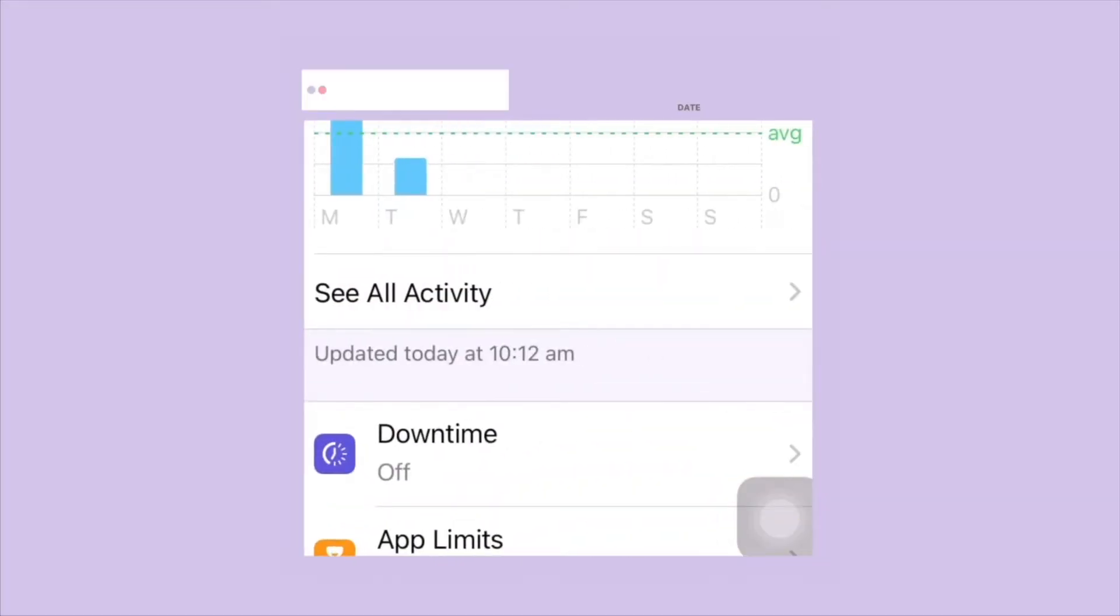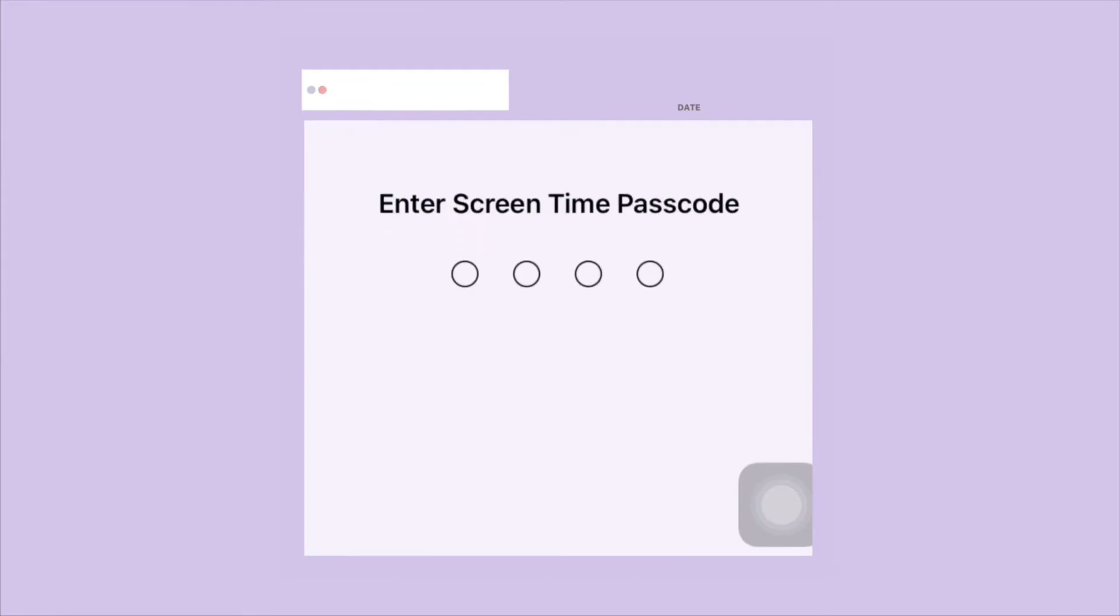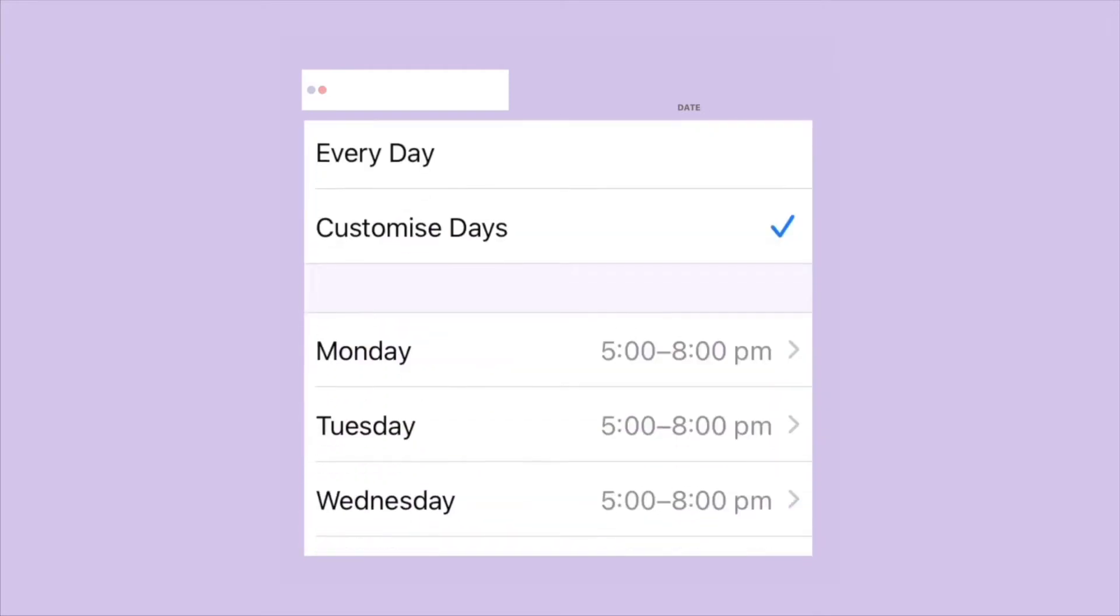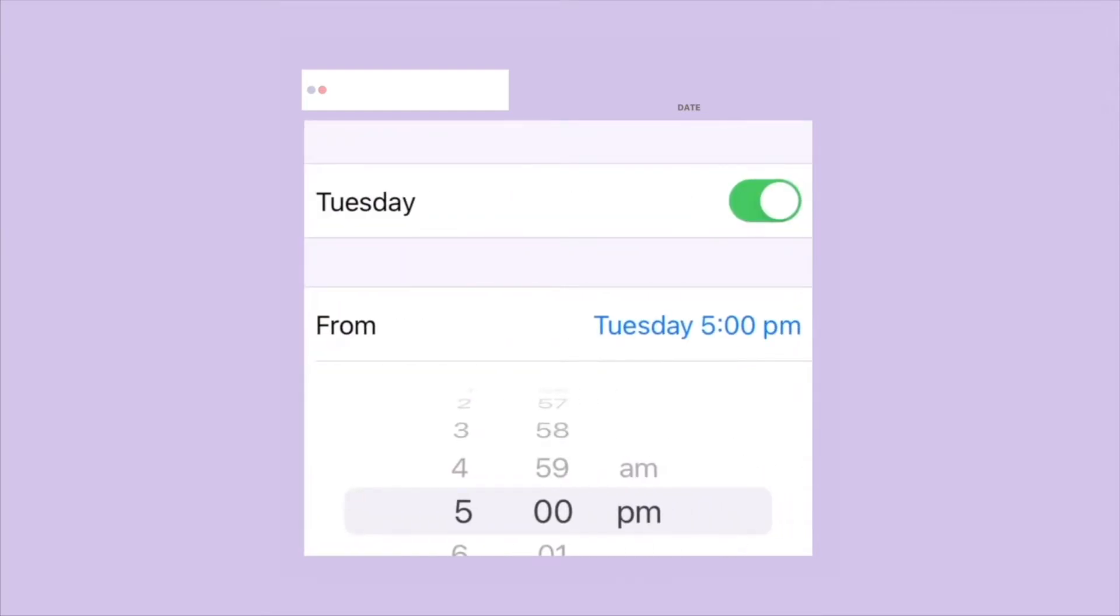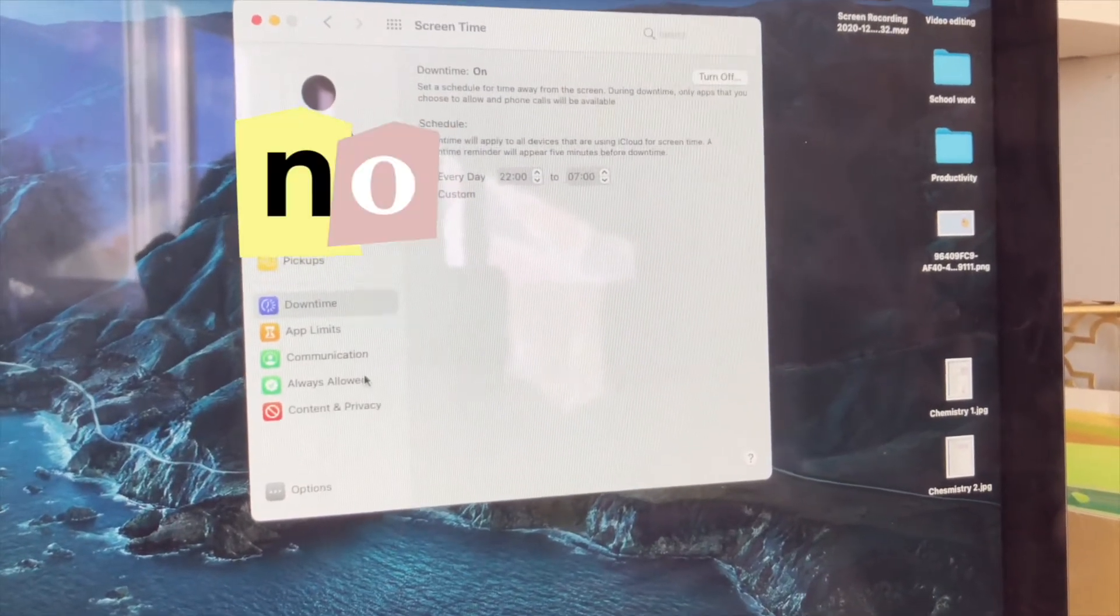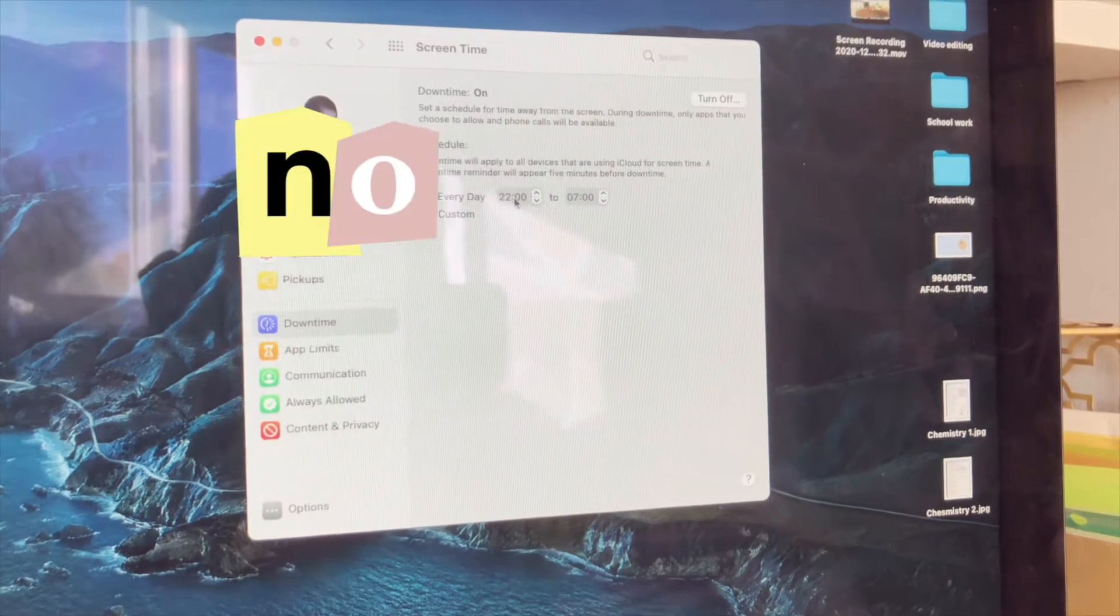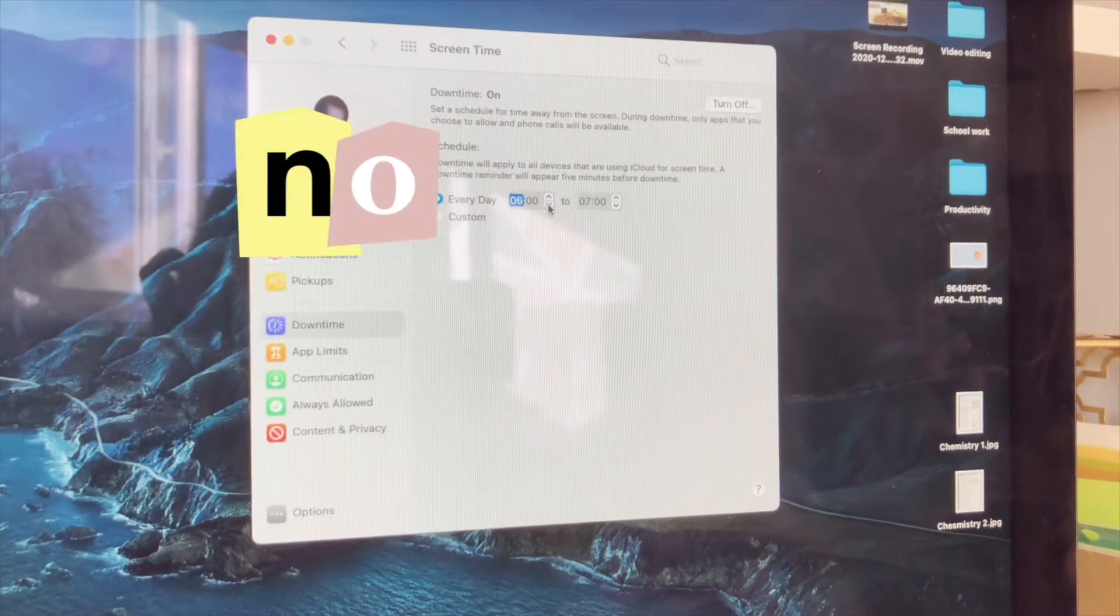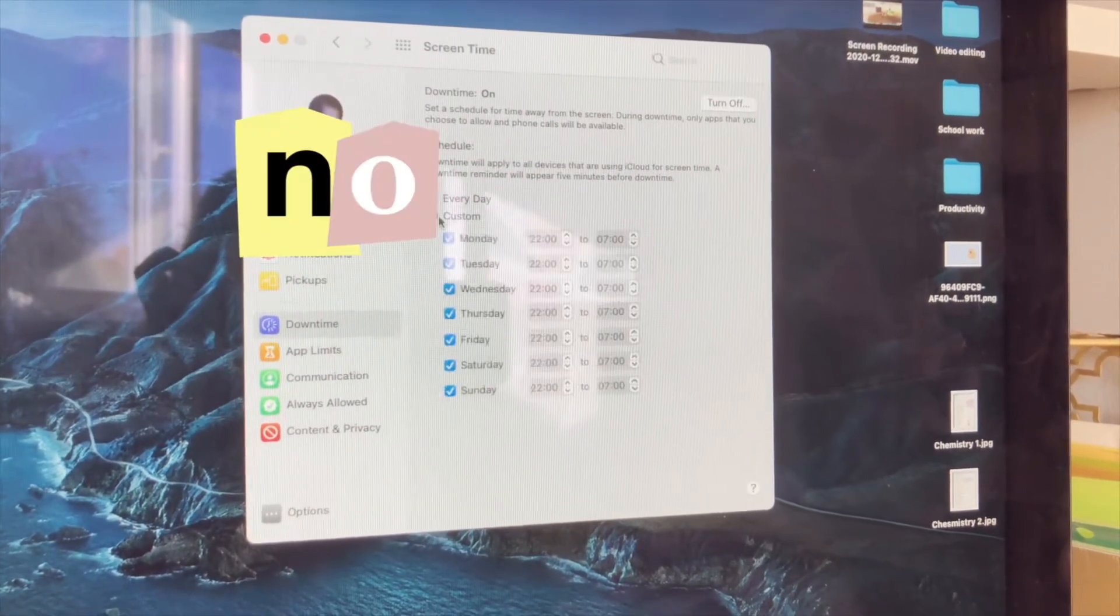There are some apps that do that while you're doing productive work. One includes Forest, another one Fauna. Forest is paid but Fauna is free, though I think you need Messenger to sign up. If you have an iOS device or Mac, then Screen Time works. Unfortunately, I don't know any apps for Android or Windows, so if you have an Android or Windows device and you know what it is, comment down below and I'll try to pin your comment.